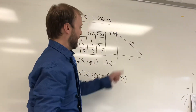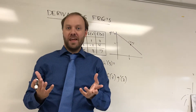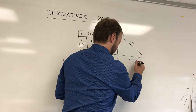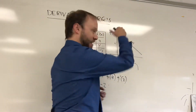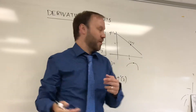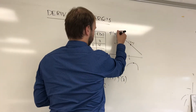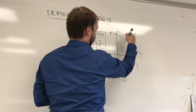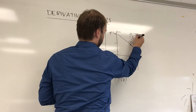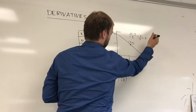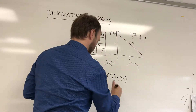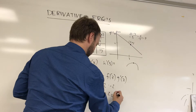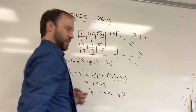Finally, g prime of 3: remember that the derivative of a graph is really the slope. If they give you a straight line, use algebra to find the slope. The slope here is ten minus four over zero minus three — that's six over negative three, so the slope is negative 2. So we have: 4 times 4 is 16, plus negative 2 times negative 2 is 4. The result is 20, which would be my value of h prime of 3.